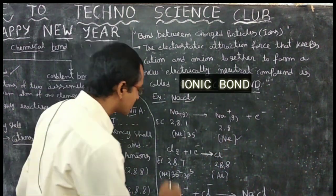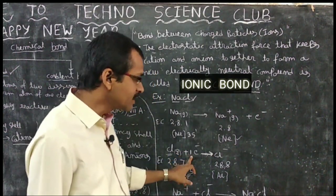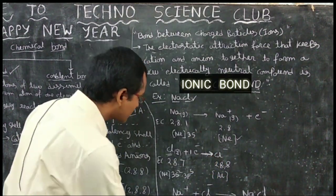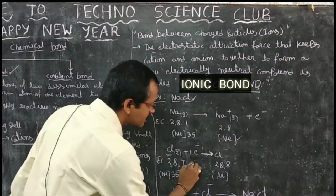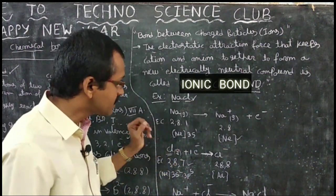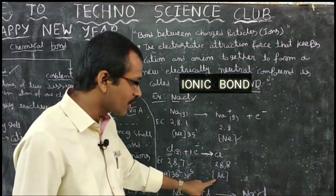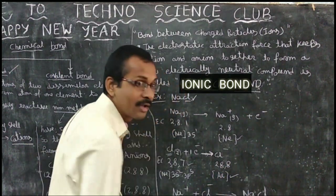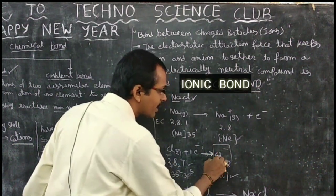Similarly, chlorine in gaseous state gains one electron and forms the Cl− anion. Chlorine has an electronic configuration of 2, 8, 7. If one extra electron is added to its outermost shell, it becomes stable. So chlorine gains one electron, achieves the stable electronic configuration 2, 8, 8 — like argon — and forms the Cl− anion, which is stable.